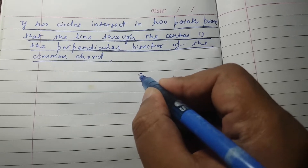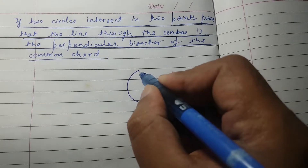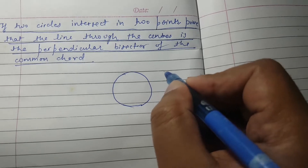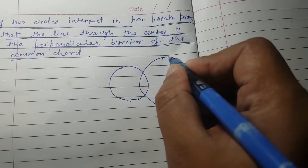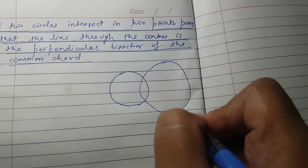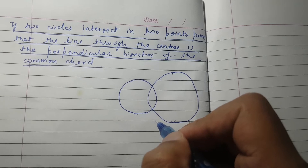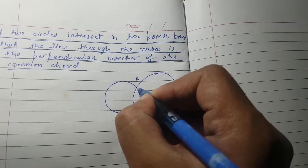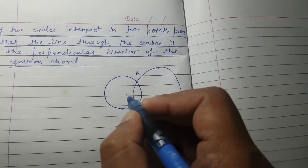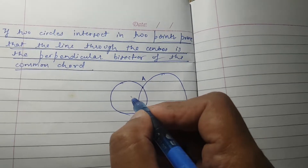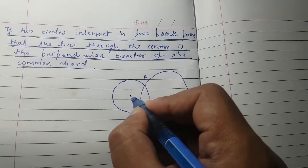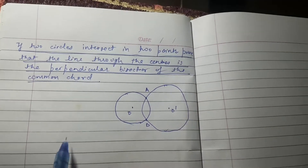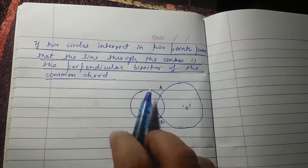So I have one circle like this and another circle like this. They are intersecting at two points — let one point be A and the second point be B. The center of the first circle is O and the center of the second circle is O'.